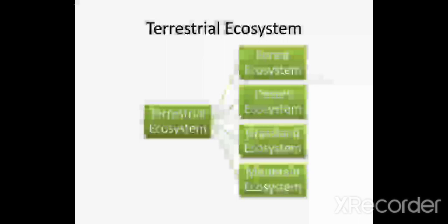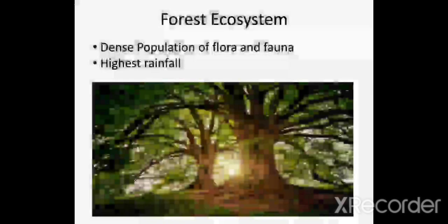There are many types of terrestrial ecosystem: forest ecosystem, desert ecosystem, grassland ecosystem, and mountain ecosystem. Let's explore some of the common terrestrial ecosystems. Forest ecosystem.